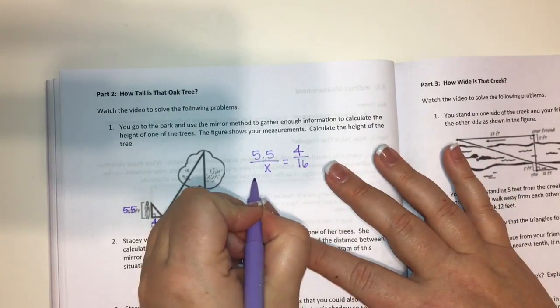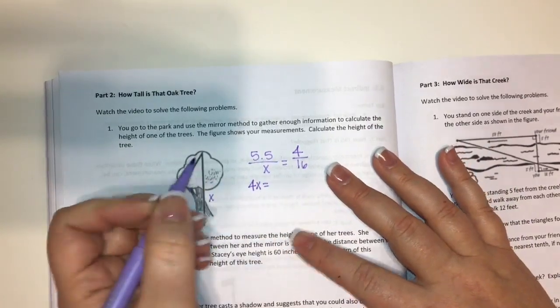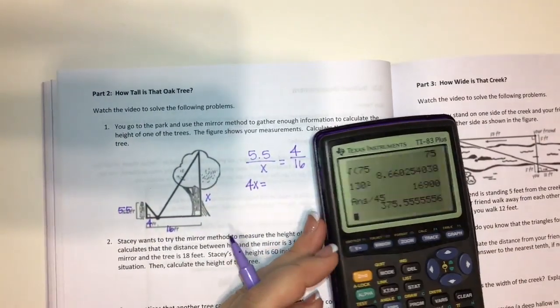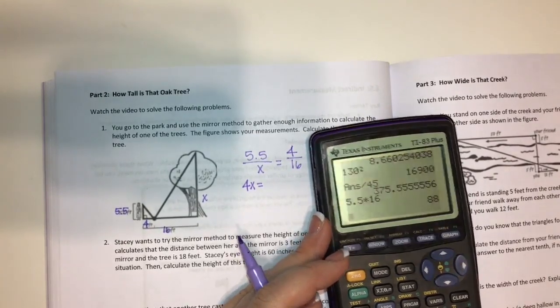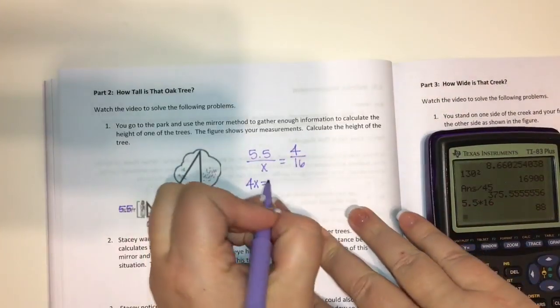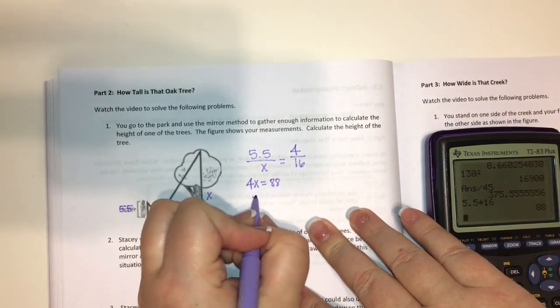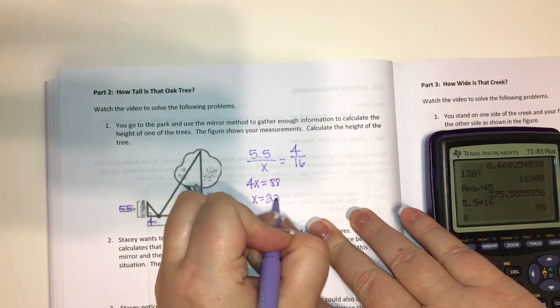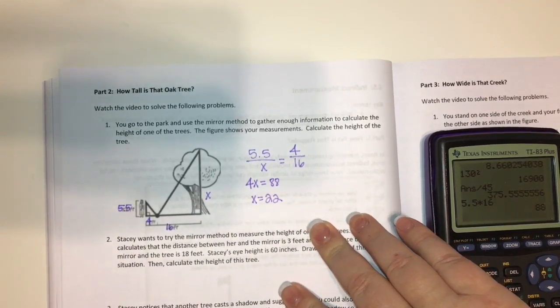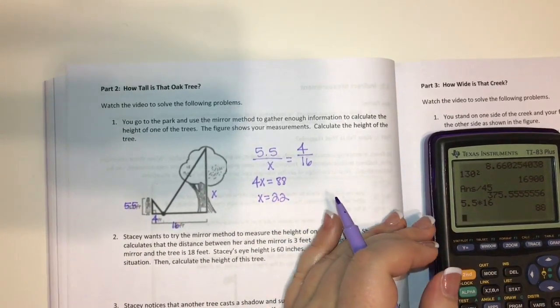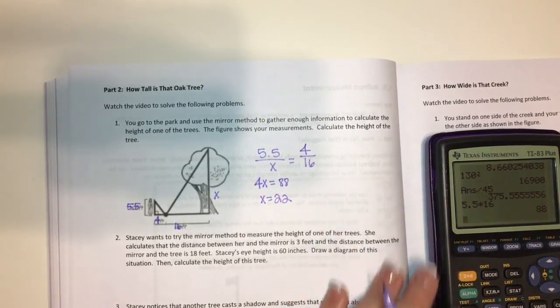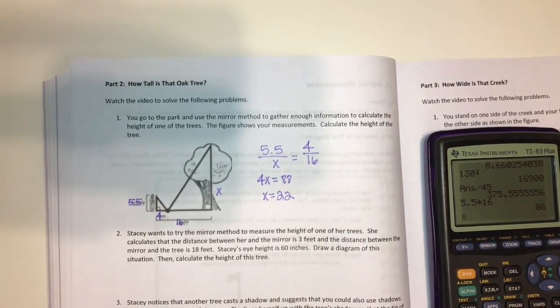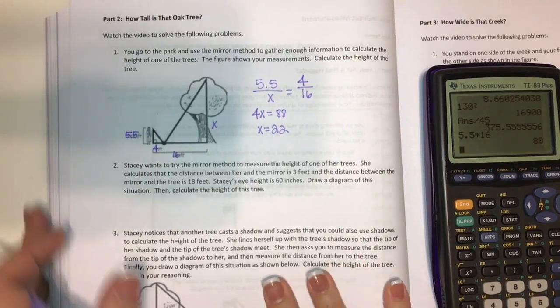Now we cross multiply, we get 4X equals 5.5 times 16. I'm going to stick that in the calculator, which gives me 88. Now when I divide, I get 22. So the tree's 22 feet. That was much simpler than me trying to find a ladder and trying to find a tape measure that would be long enough in order to measure that. Let's look at the next one.